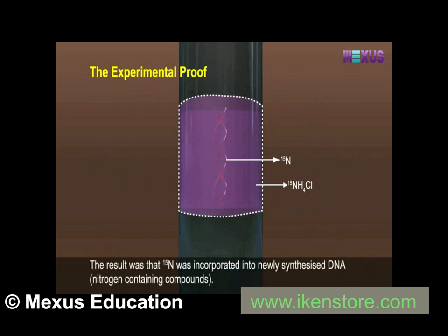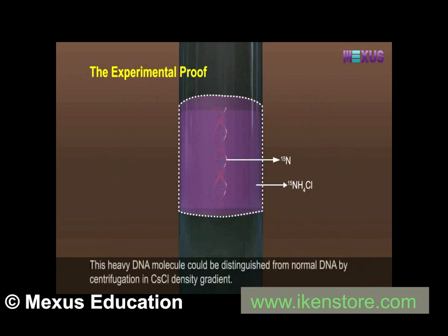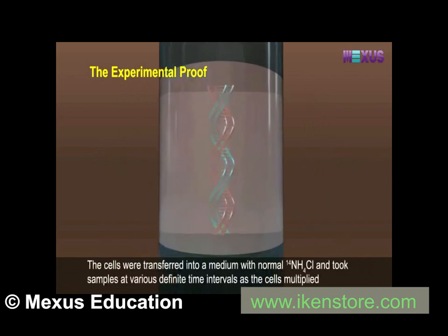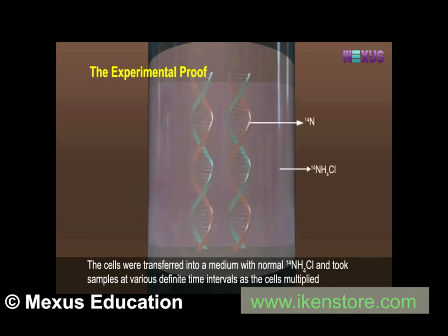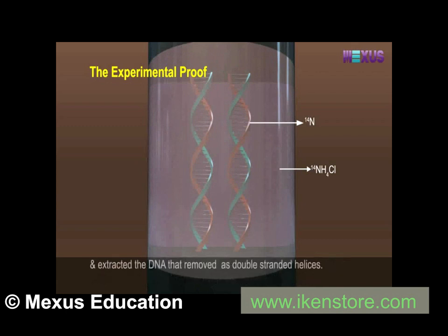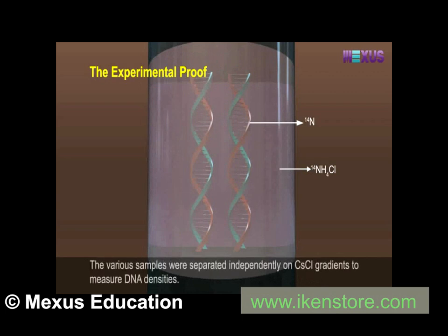The result was that 15-NH4Cl was incorporated into newly synthesized nitrogen-containing compounds. This heavy DNA molecule could be distinguished from normal DNA by centrifugation in CsCl density gradient. The cells were then transferred into a medium with normal 14-NH4Cl, and samples were taken at various definite time intervals as the cells multiplied and DNA was extracted.